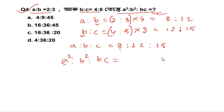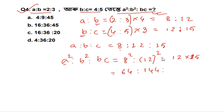So A squared is equal to 8 squared which is 64, B squared is equal to 144, and BC is equal to 12 into 15. We then divide and cancel to simplify the ratio.